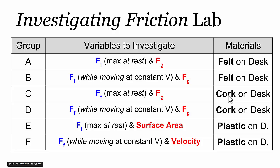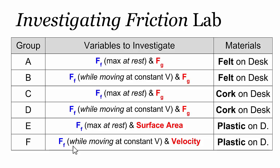Groups C and D did something similar except they used a cork surface on the desk to find out if different materials have different effects on the force of friction. Group E investigated the relationship between surface area and the frictional force, and Group F investigated whether the speed at which two surfaces were moving with respect to one another affected the size of that frictional force while those two surfaces were sliding. Let's look at some of the results.